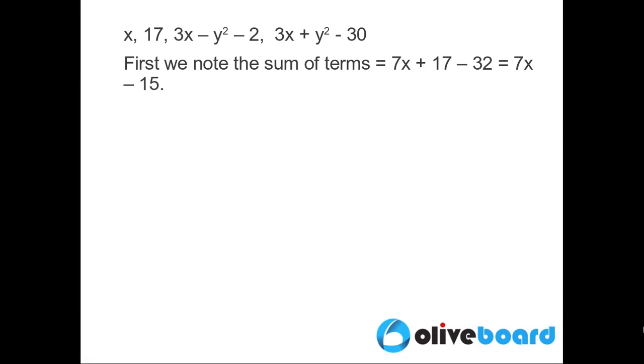First we note that adding the four terms we get the sum as 7x + 17 - 32 = 7x - 15. Now in an AP, the difference between two consecutive terms is the same.